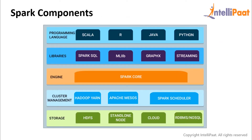Let us understand the components of the Spark ecosystem. The Spark Core component is the most vital component of the Spark ecosystem — it is responsible for basic IO functions, scheduling, monitoring, and so on. The entire Spark ecosystem is built on top of it. Spark can be deployed through Hadoop YARN, Mesos, or Spark's own cluster manager. The Spark ecosystem library is composed of Spark SQL, MLlib, GraphX, and Streaming. Spark SQL helps us perform queries on data and store data using SQL-like queries.